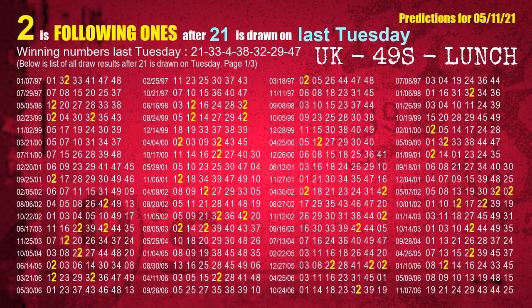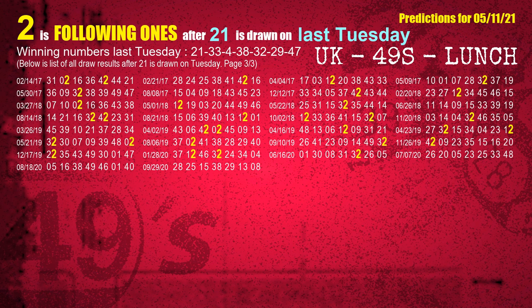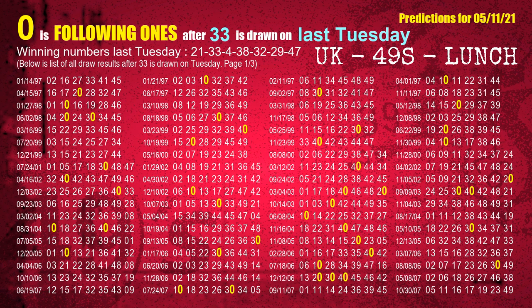After calculating following ones from today's result, we will find out following ones through the result of the same day last week. The first winning number last Tuesday is 21. We list all draw results which are one week after a Tuesday draw with 21 as a winning number. The most frequently following units digit is 2 when 21 is the winning number on last Tuesday. The second winning number last Tuesday is 33. The most frequently following units digit is 0 when 33 is the winning number on last Tuesday.